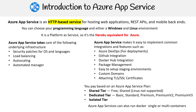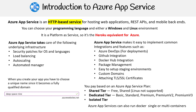Azure App Services is not just for traditional VMs or monoliths — you can also run Docker single or multi-containers. When you set up a project, you'll choose your domain name on the azurewebsites.net domain, and you can obviously override that with your custom domain name. That's it — thank you.